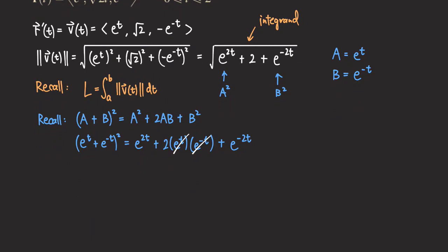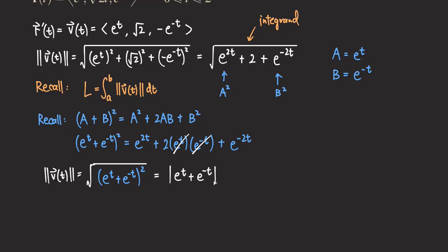So we can rewrite the speed function: instead of the original expression under the square root, we have √((e^t + e^(−t))²). The square and square root cancel each other out, giving us the absolute value of (e^t + e^(−t)). Since both e^t and e^(−t) are always positive, their sum is positive, so we drop the absolute value and simply get e^t + e^(−t).